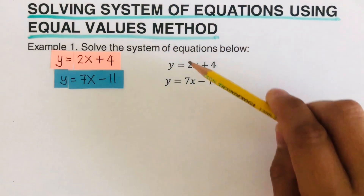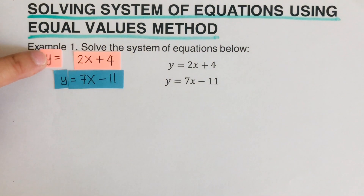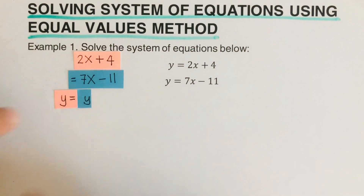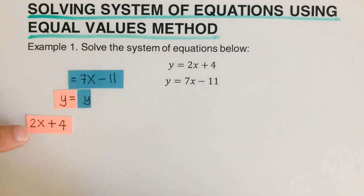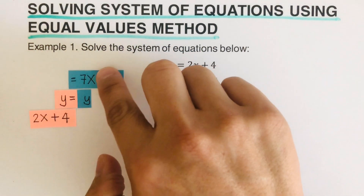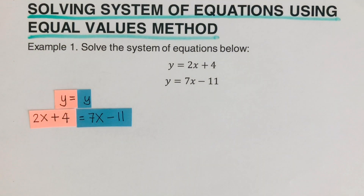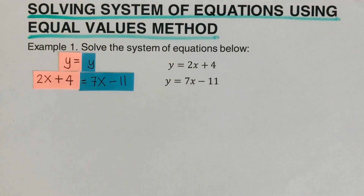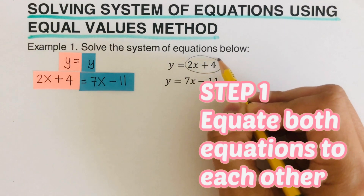As you can see, y is equal to y. In this problem, both of them are y, so I can say y is equal to y. Since y is equal to y, it means that the orange card — which represents y equals 2x plus 4 — could also be equal to the blue card, which is 7x minus 11. This is the first step: we are going to equate both equations to each other.